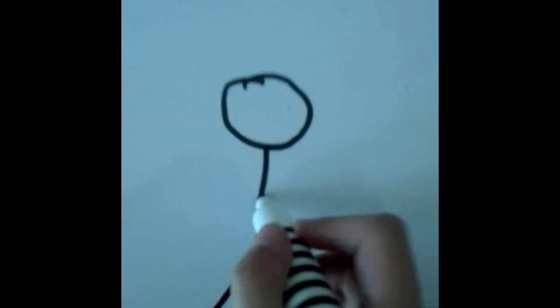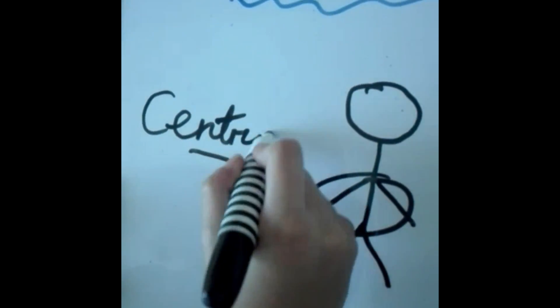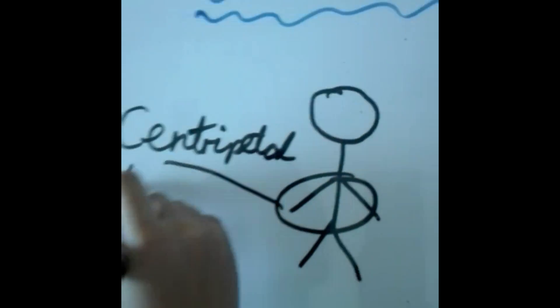Centripetal force is the force that allows an object to move in a curve around the axis. For example, the hula hoop around your body.